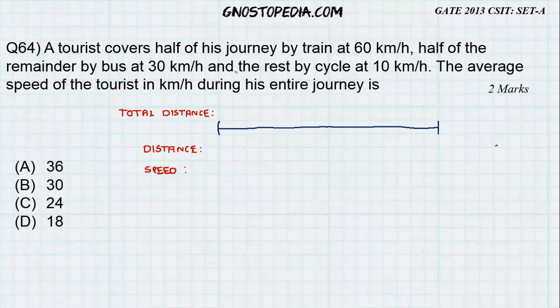A tourist covers half of his journey by train at 60 km per hour. Let me assume the total distance of the journey be x. So half of the distance will be x by 2 and it is traveled at the speed of 60 km per hour.